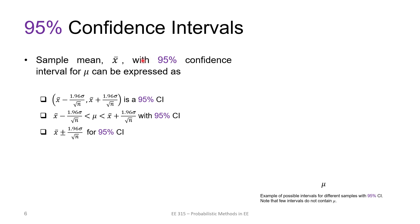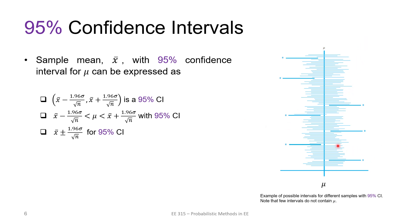The confidence interval for the sample mean x-bar at 95 percent confidence is expressed as an inequality and can also be written in terms of plus or minus. Across different samples, note that a few intervals do not contain mu. Since x-bar does not equal mu and can be shifted left or right, about 1 in every 20 cases will miss the true mean — which is why we call it a 95 percent confidence interval.